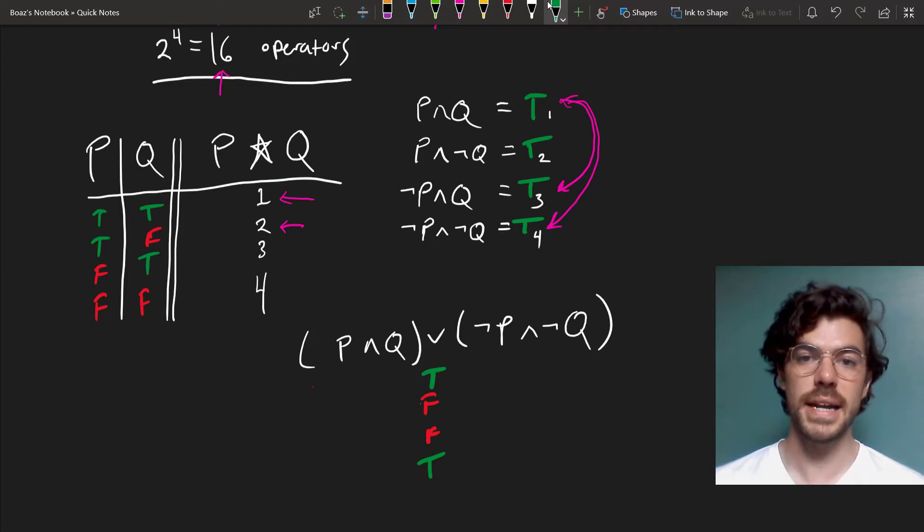So, in this way, we can make any binary operator that we want out of disjunctive strings of these sentences, and this shows, at least for binary operators, our system is truth-functionally complete.